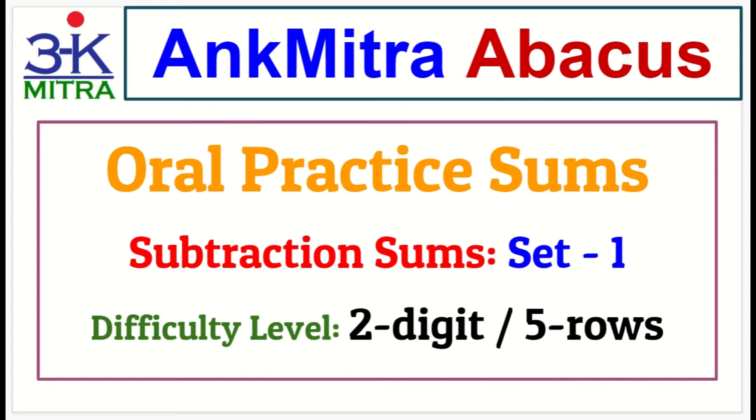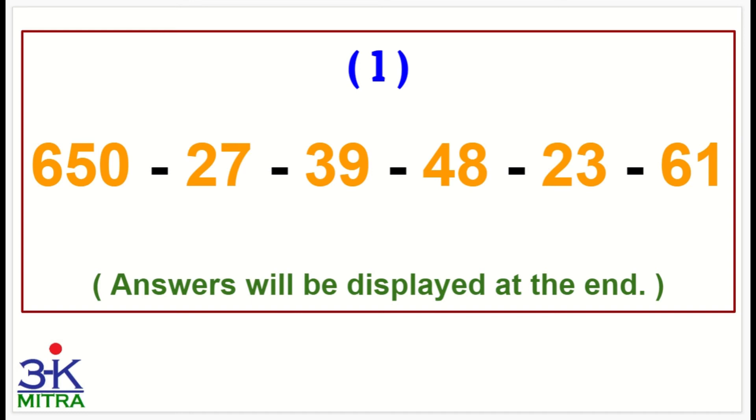Let's begin with the first sum now. 650 to begin with, then minus 27, minus 39, minus 48, minus 28, minus 61. That is, write down the answer.